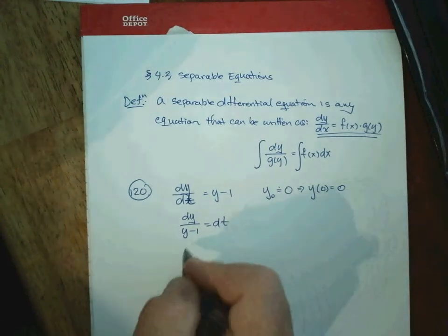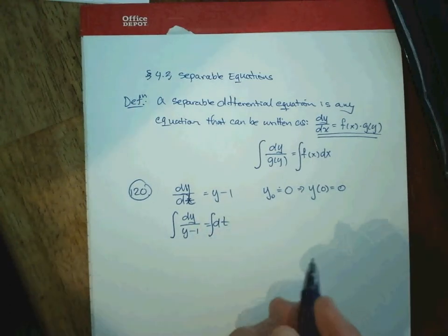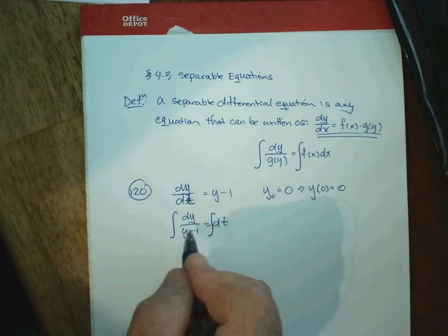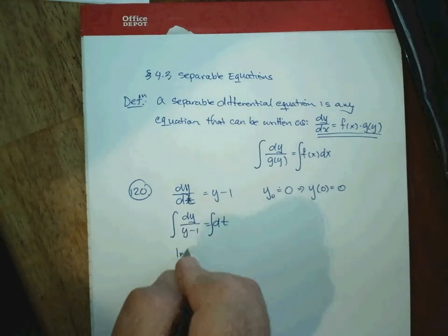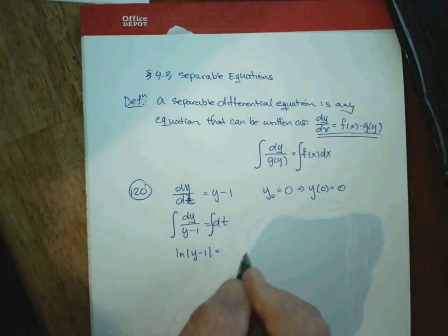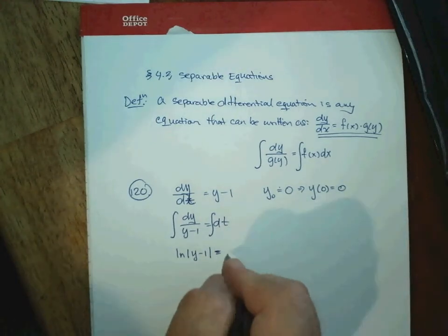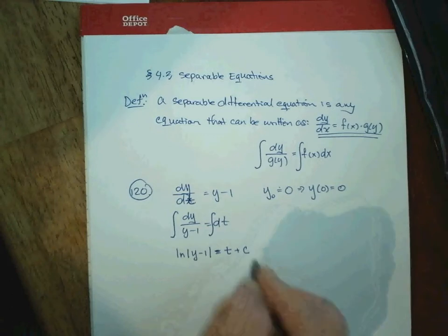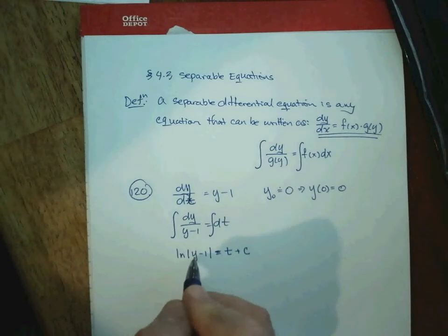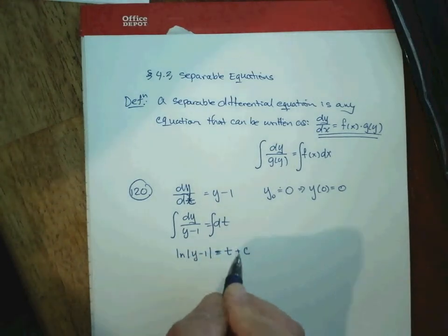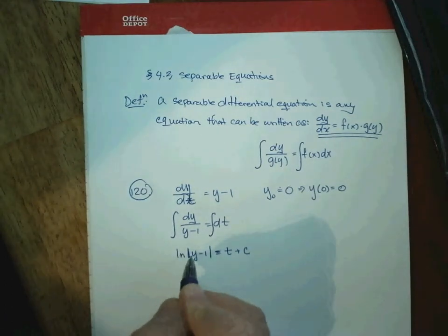Now in that separated form, we integrate both sides. On the left, we're integrating 1 over (y − 1), which integrates to the natural log of the absolute value of y − 1. On the right, we integrate dt — that's just integrating 1 with respect to t — giving us t plus a constant of integration. We have solved for y, but it's embedded within this natural log.